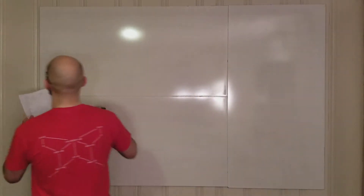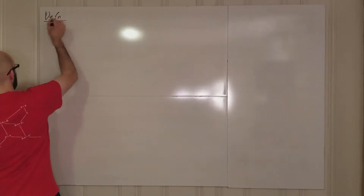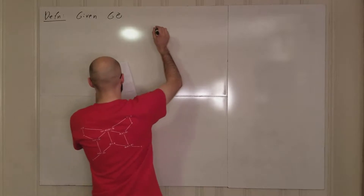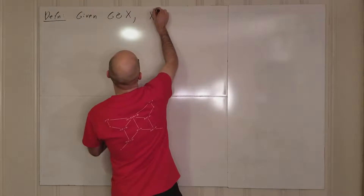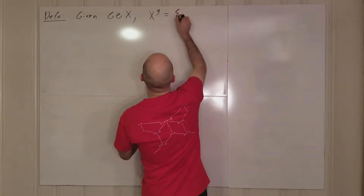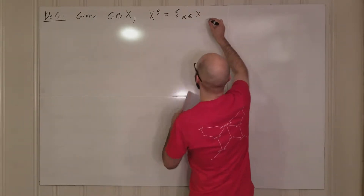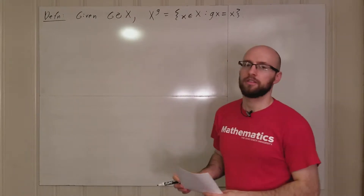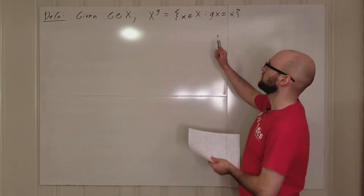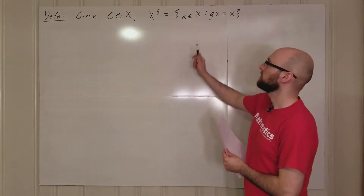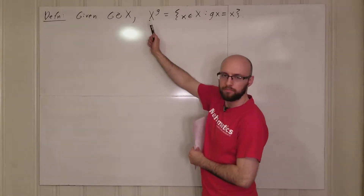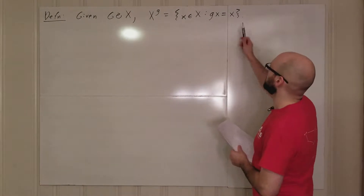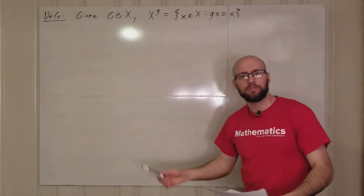We have just a few more things to discuss. Given X and G, we define X^g to be the collection of all points in X that g fixes. Earlier we had the stabilizer of a point x — the collection of elements in G that fix a particular x. Here, given an element g in G, we're considering the elements in X such that g fixes that point. It's kind of like the stabilizer but from X's perspective.